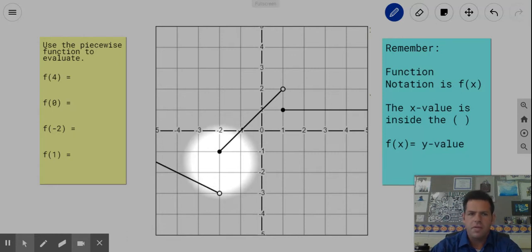So what I have here is a few things. The first thing is a couple things to remember here. Function notation is f of x. The x value is usually inside the parentheses and f of x is equal to the y value. So whatever's on the other side of the equal sign would be our y value.